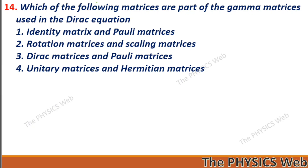Next, question fourteen: which of the following matrices are part of the Dirac equation? The identity matrix and the Pauli matrices. So, one is your correct option.